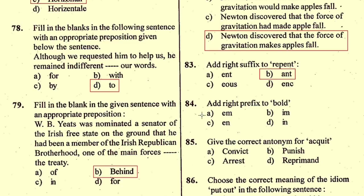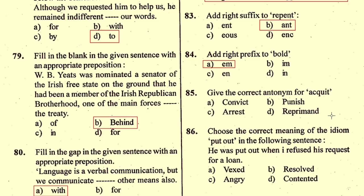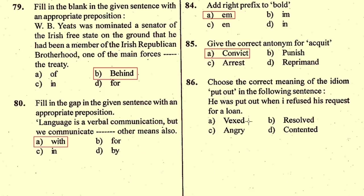Question number 85: Give the correct antonym for 'acquit' — the antonym is 'convict', option A. Question number 86/87: Choose the correct meaning of the idiom 'put out' in 'He was put out when I refused his request for a loan.' The right option is A, vexed, V-E-X-E-D.